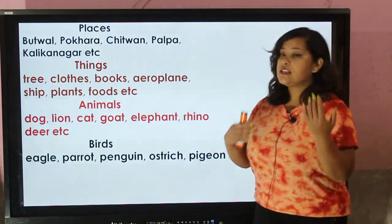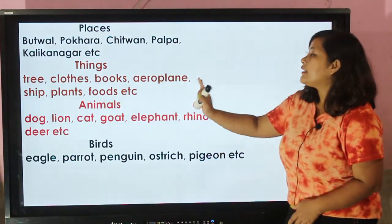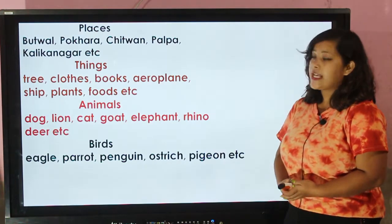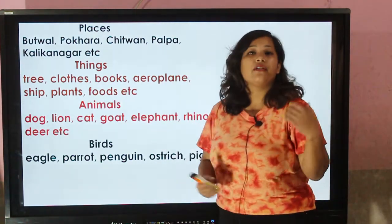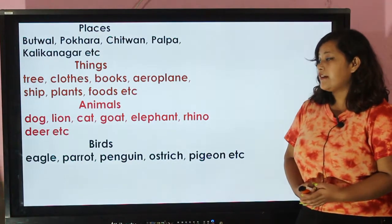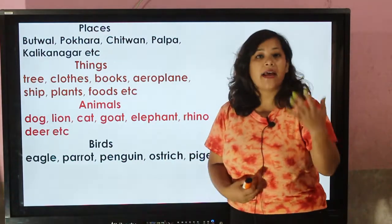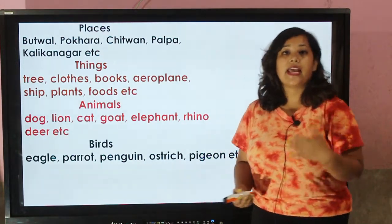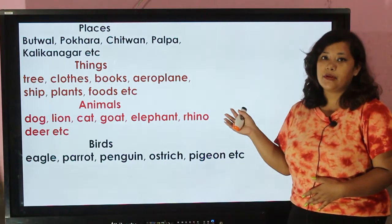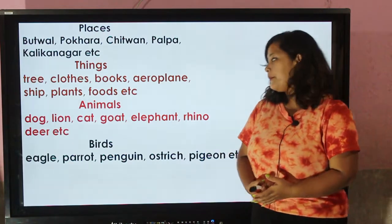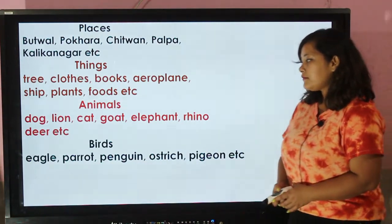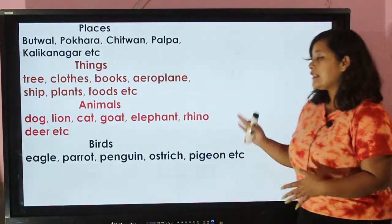Here we have some examples of things — things like tree, clothes, books, airplane, sea planes, plants, foods, etc. Instead of these things we can also use the pronoun 'it'. Animals like dog, lion, cat, goat, elephant, rhino, deer, etc. — instead of repeating their names time and again, we can also use the pronoun 'it'. We will be more clear about this by looking at some examples. Here we have names of some birds: eagle, parrot, penguin, ostrich, pigeon, etc. Instead of using their bird names, we can also use 'it'.